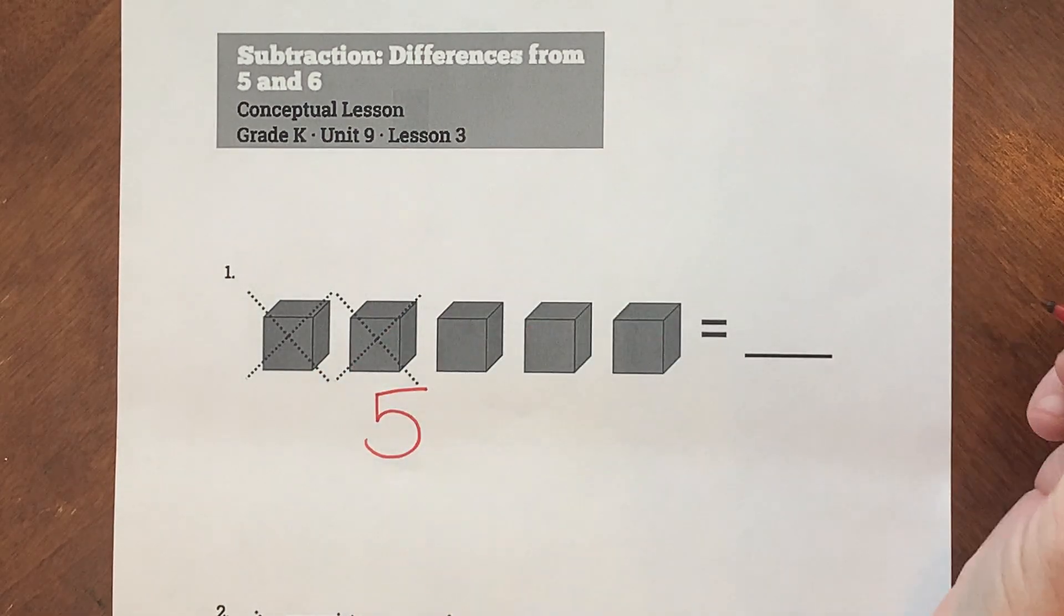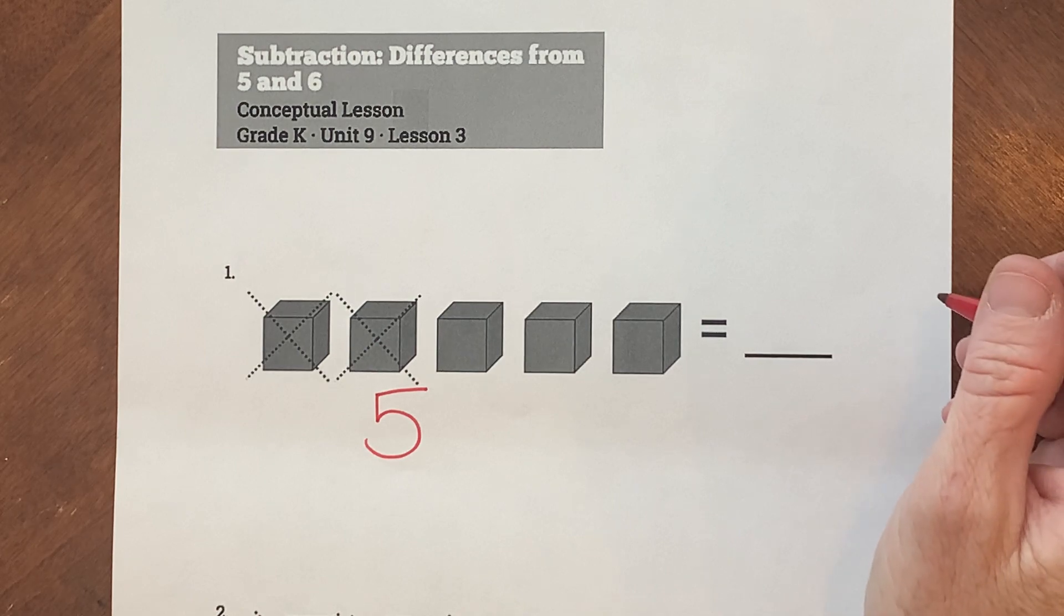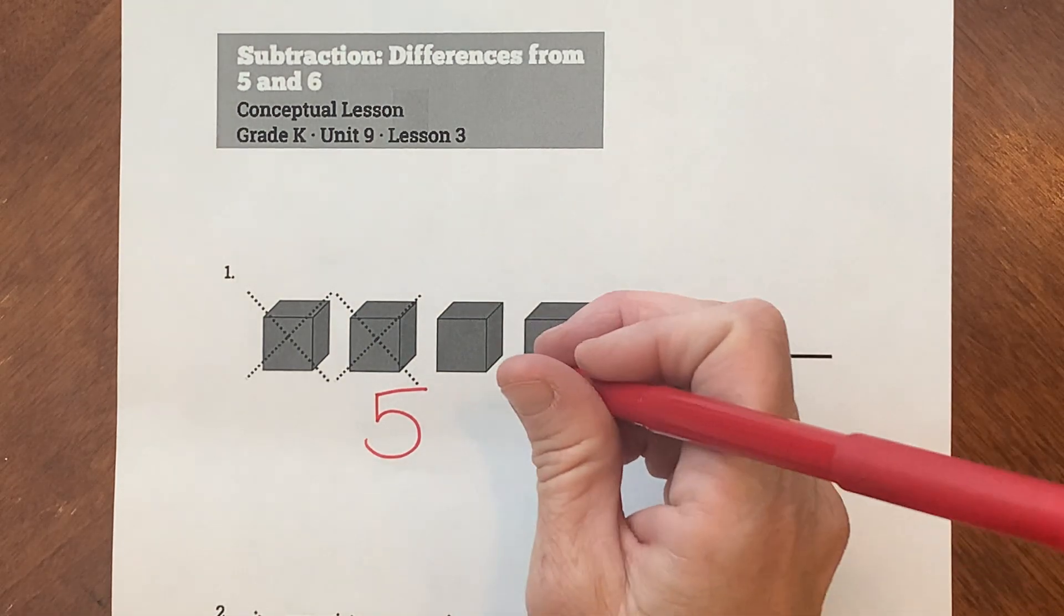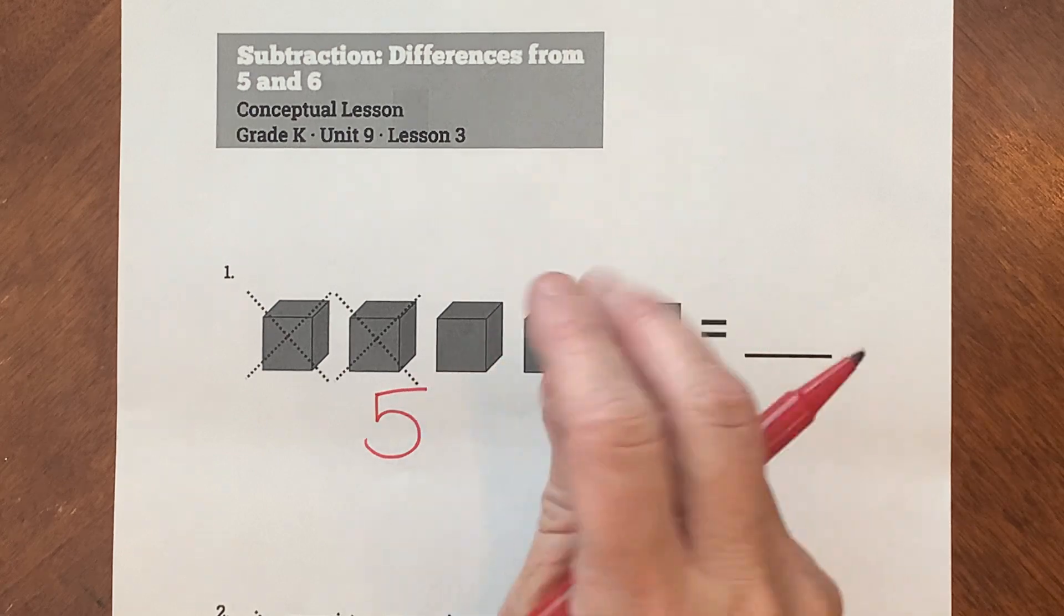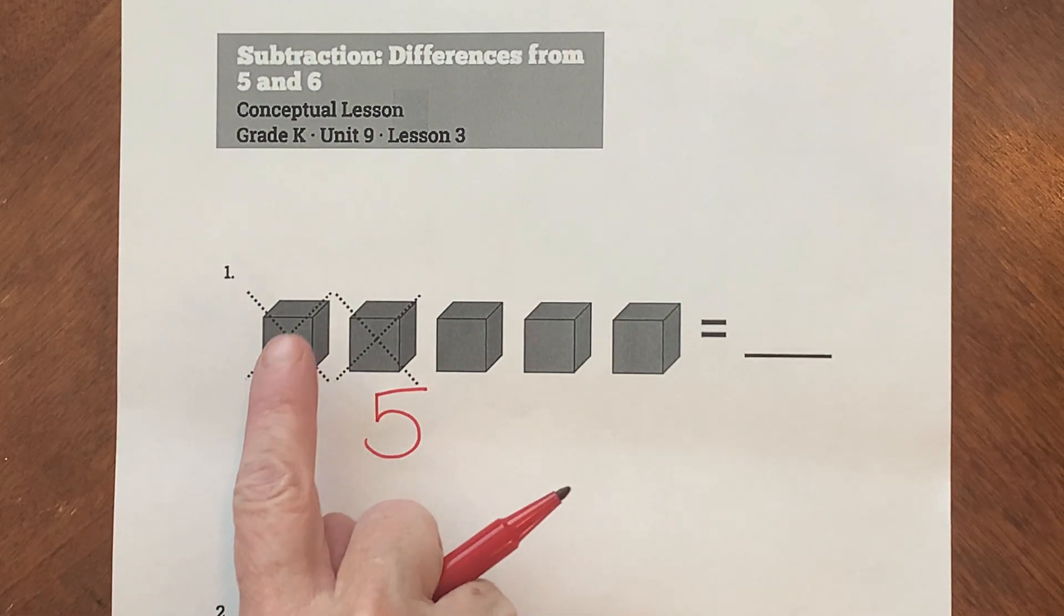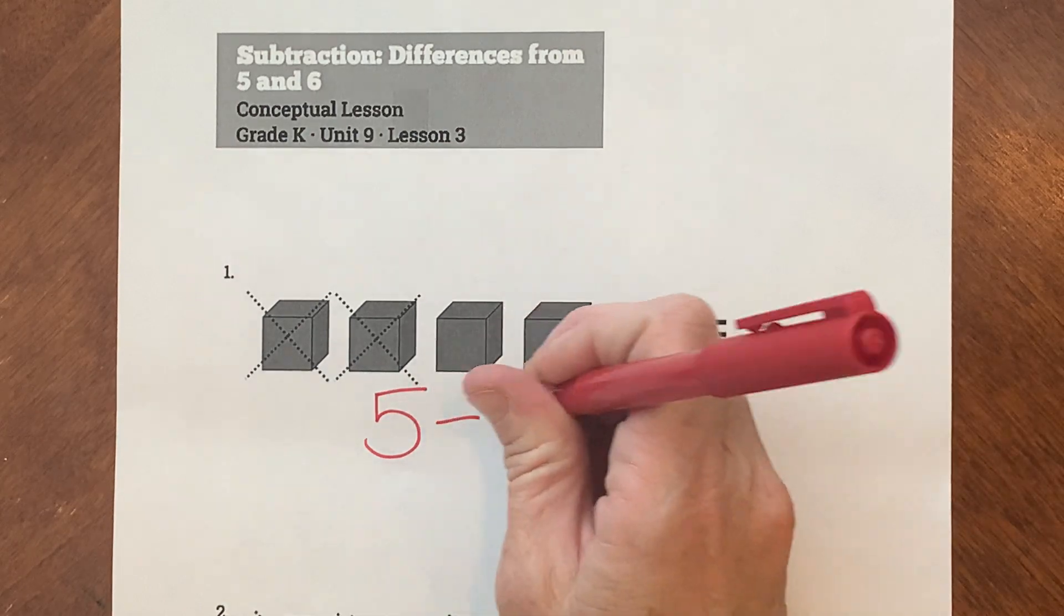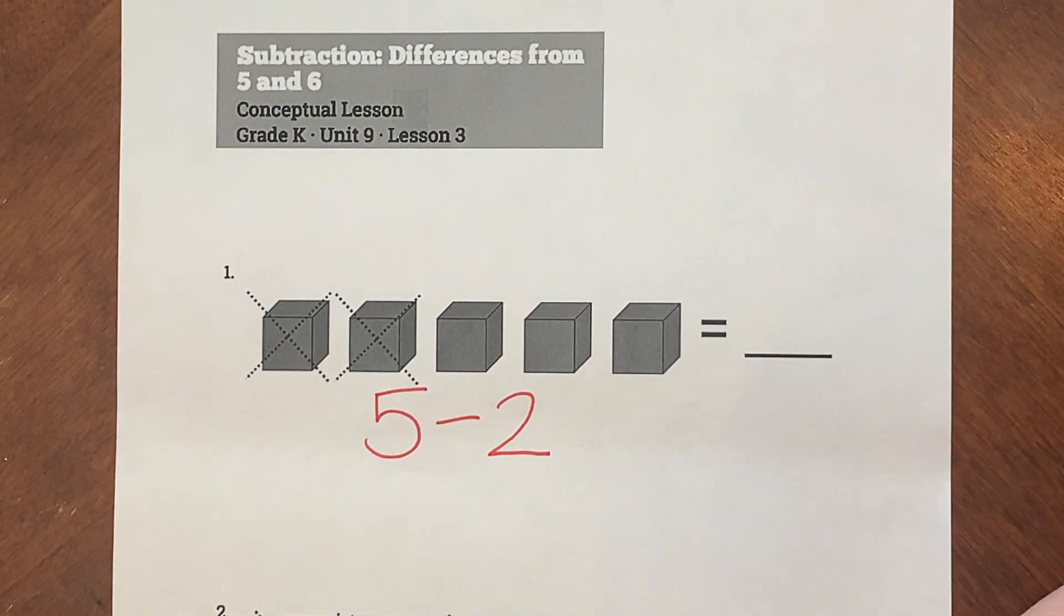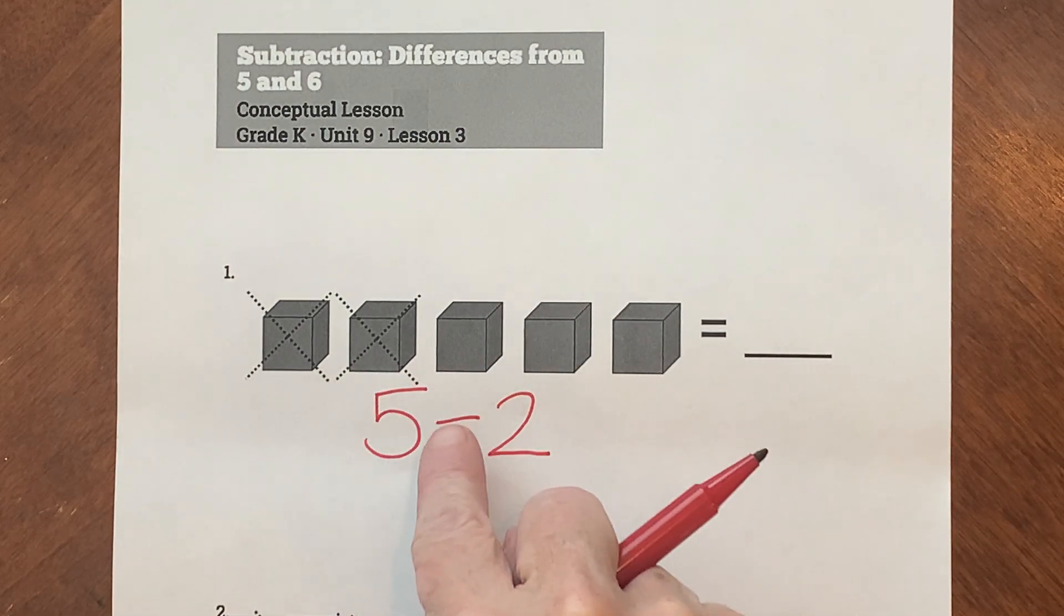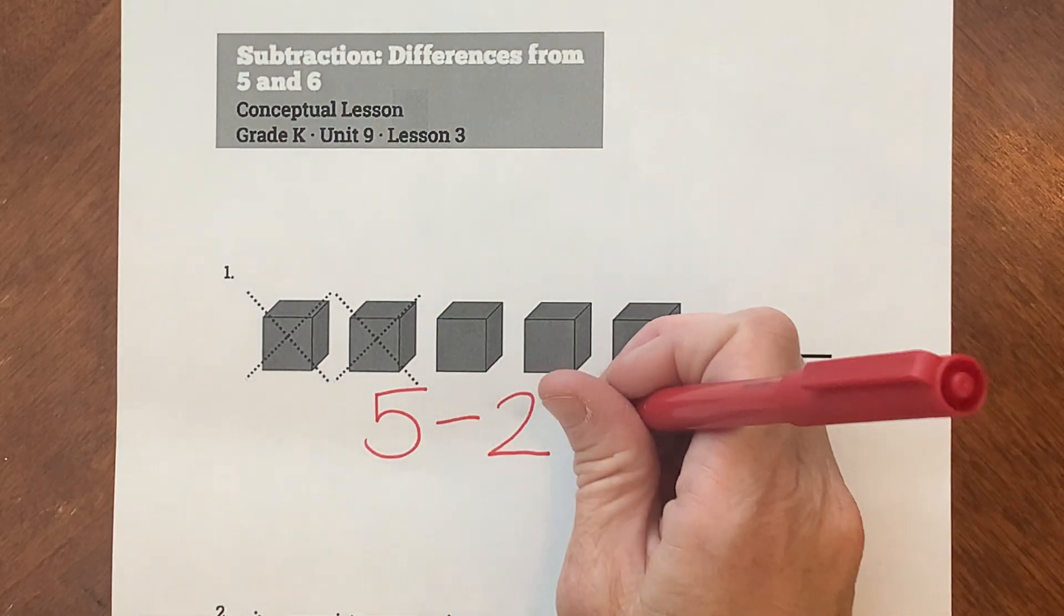So I could say Sarah, I could make up someone's name and say Sarah had 5 blocks. Then she took away how many? How many blocks are we taking away or subtracting? 1, 2, 3, 4, 5. So Sarah had 5 blocks.